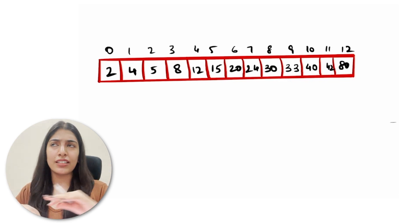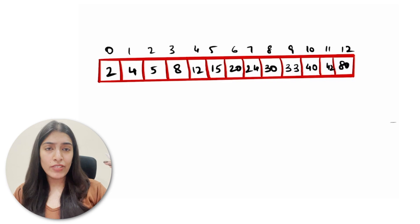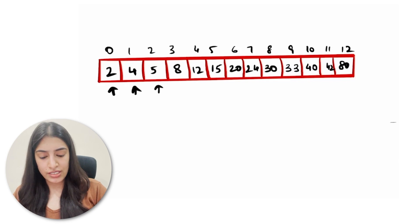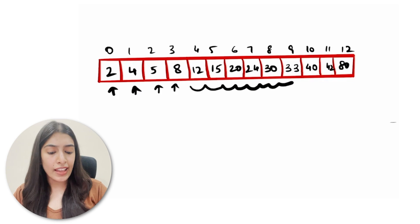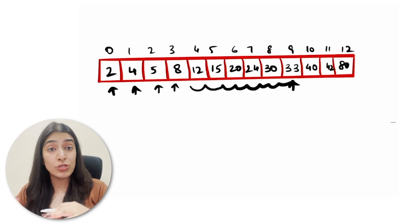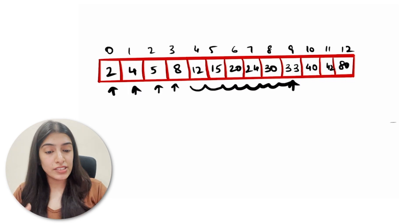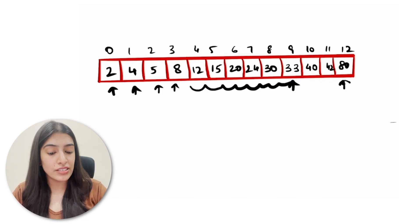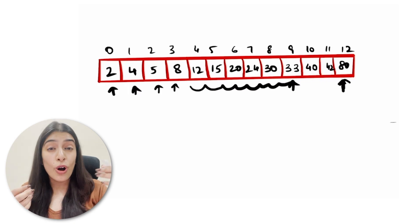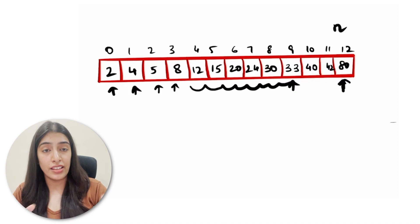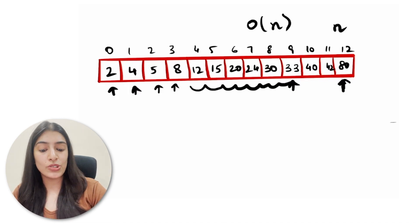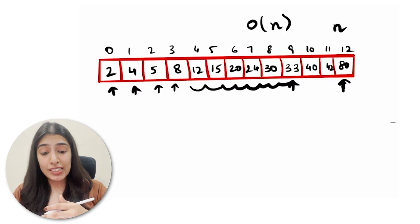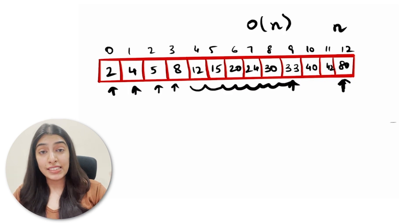Let's think simply about how we'd do that. One way is to start from the first number and check: is this 33? No. Is this 33? No. We keep checking one by one until we find it. This is one approach. What would the time complexity be? In the worst case, the number we're looking for is the last element — say we were finding 80. We'd have to go through all n elements, so the time complexity is O(n).